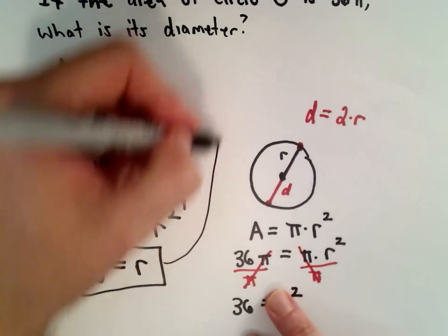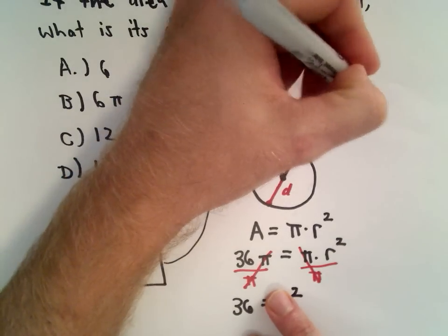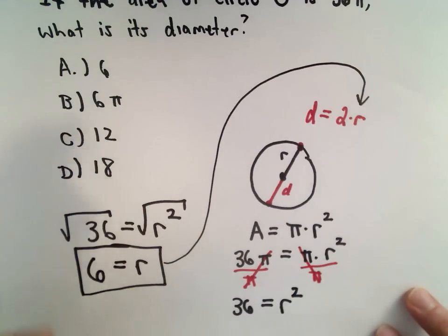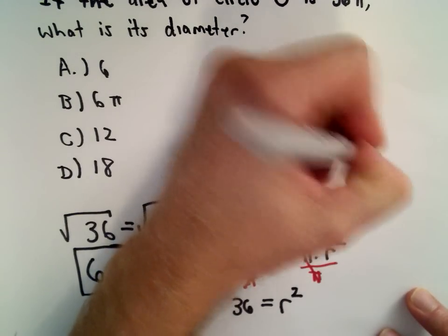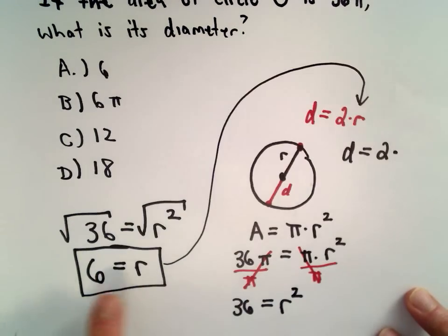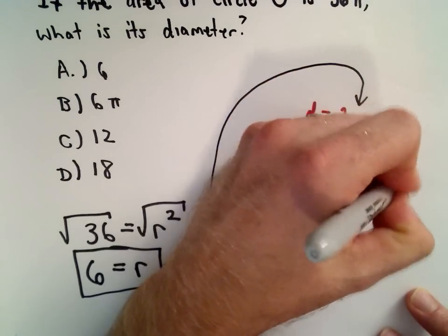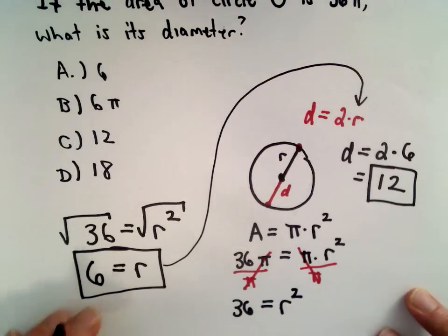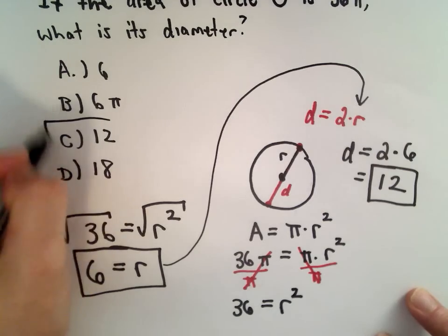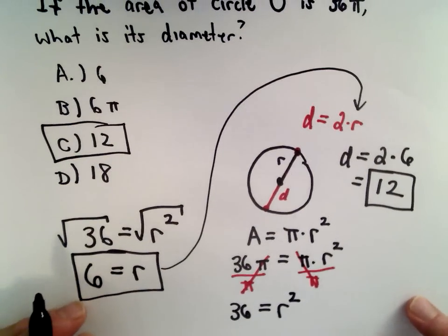So now that we know the radius, we can just drop that value into our formula. We double the radius to get the diameter. So the diameter is going to be 2 times 6, this value we just found, which will give us a value of 12. So the diameter of our circle will be 12 units, and that will be answer choice C.